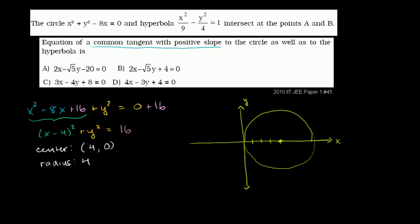Now let's think about the hyperbola. The x squared term is positive, so it's a hyperbola that opens to the right and left. When y equals 0, x squared over 9 equals 1, so x is plus or minus 3.